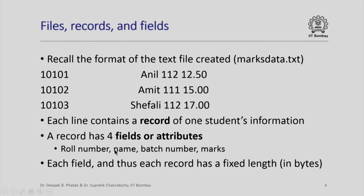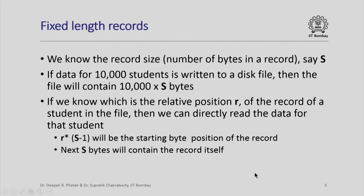These fields are roll number, name, batch number and marks. Each field and thus each record has a fixed length in bytes. If we know the record size, or number of bytes in a record, say s, then if data for say 10,000 students are written on a disk file, we know that the file will contain 10,000 into s bytes.